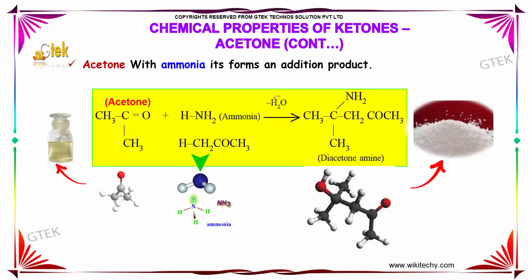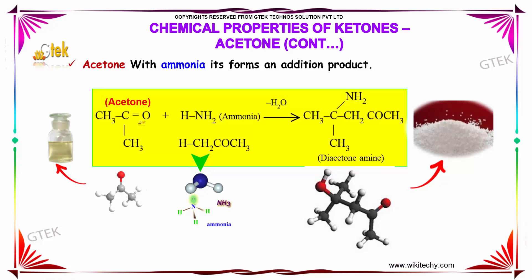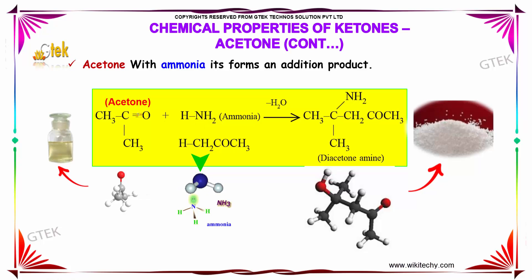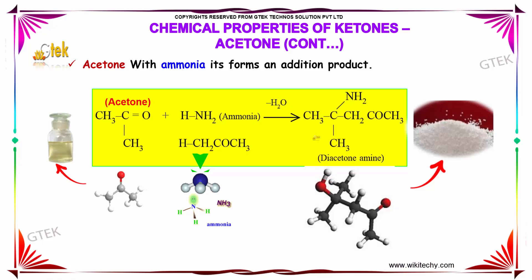When acetone reacts with ammonia, it forms an addition product. The NH2 group attacks the carbonyl double bond, and the double bond character is lost. Therefore, it forms diacetone amine.